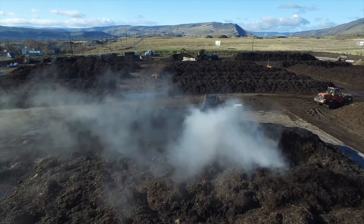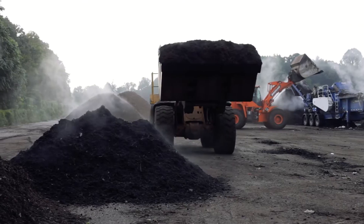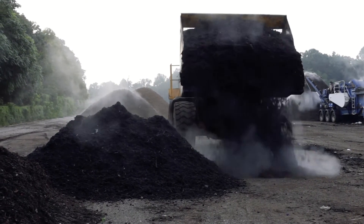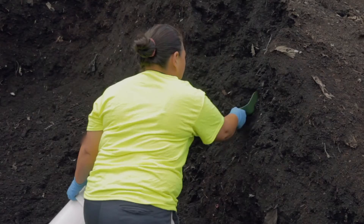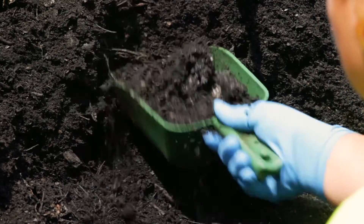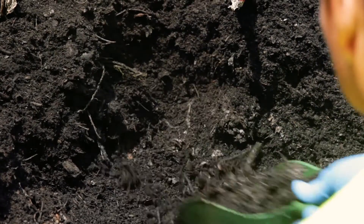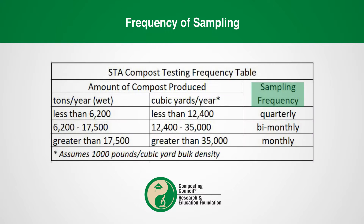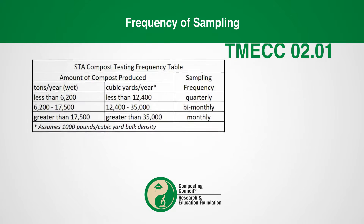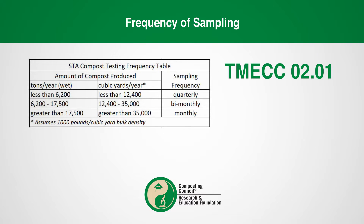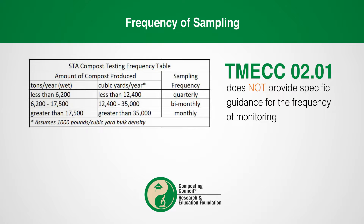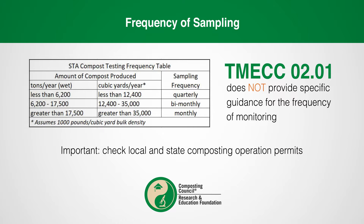The first step in the sample planning process is to determine the frequency of monitoring that will be adequate for your composting operation — that is, the number of finished compost samples that should be analyzed each year. The number of samples required per year is typically based on the amount of compost produced at a facility. The TMECC method 02.01 does not provide specific guidance for the frequency of monitoring, and it is important that all compost operators check their local and state composting operation permits to determine if a certain frequency of monitoring is required.